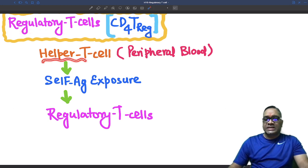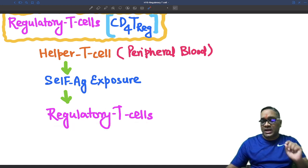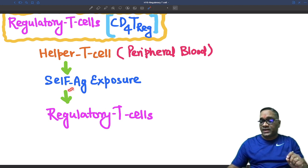These are helper T-cells present in peripheral blood. When they have self-antigen exposure, they are converted into regulatory T-cells. So basically, helper T-cells on exposure to self-antigen are converted into regulatory T-cells.